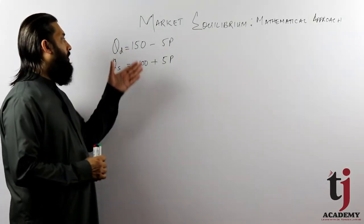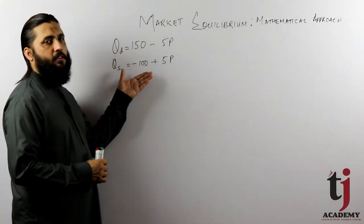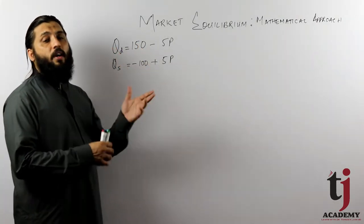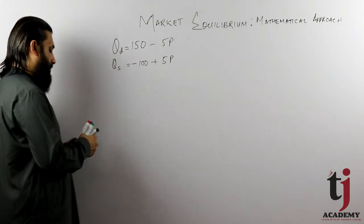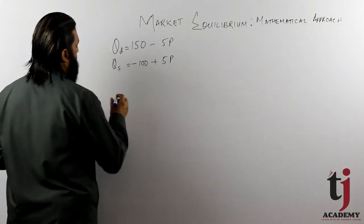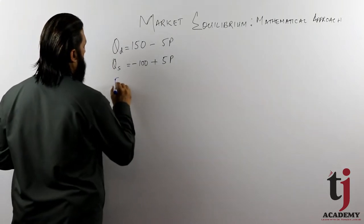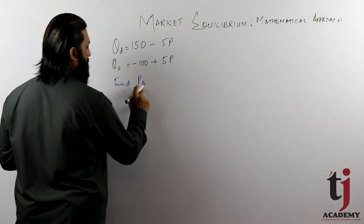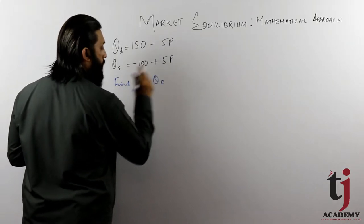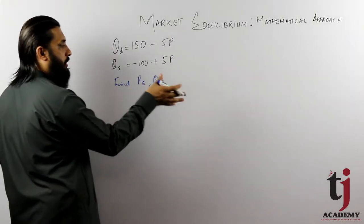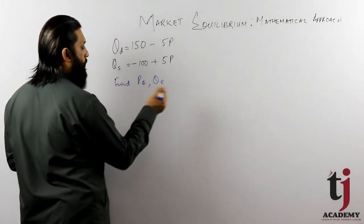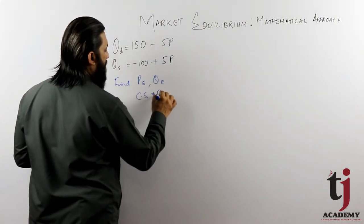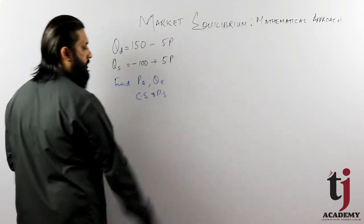We have a demand function given, supply function given, demand curve given, supply curve given. We need to find equilibrium price, equilibrium quantity, and when demand and supply meet at market price, we also find consumer surplus and producer surplus.